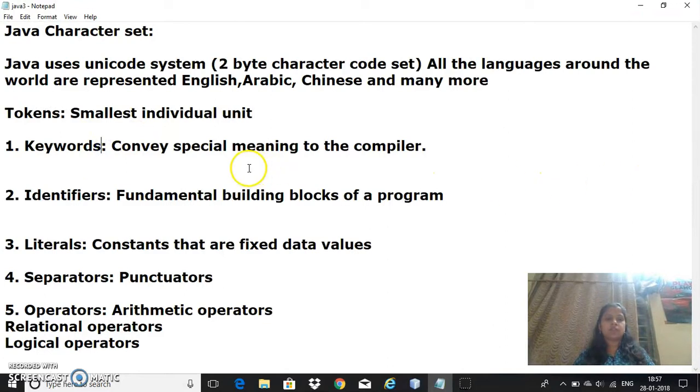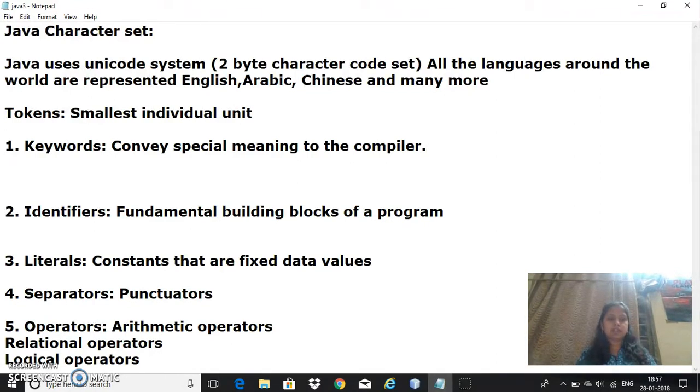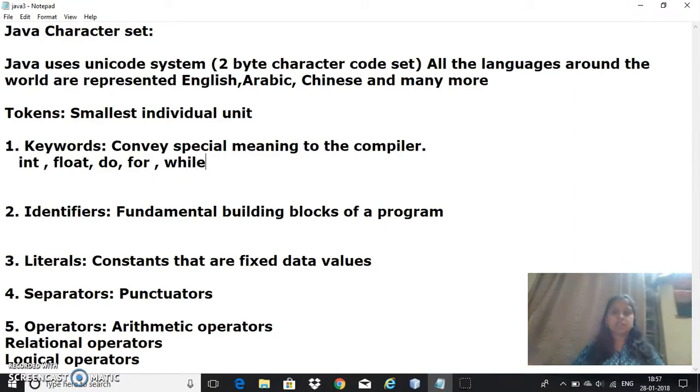Keywords - the first one, keyword, is a word which conveys special meaning to the compiler, which we cannot use as user-defined variables or any other name. We have various keywords, for example int, float, do, for, while - all these are different words described by the programming language itself which convey special meaning to the compiler and are meant to perform some action or properties.